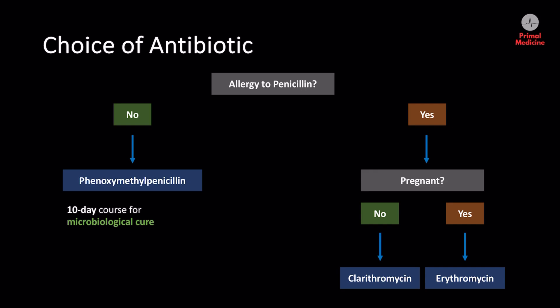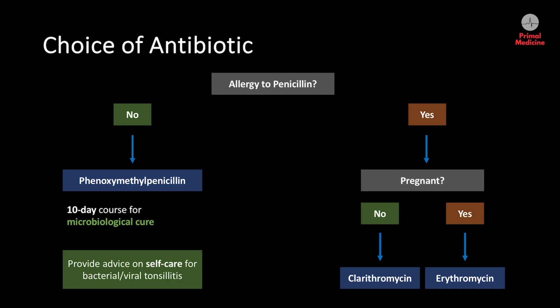If the patient has a penicillin allergy but is not pregnant, the first line is to use clarithromycin, which is a macrolide antibiotic. If the patient has a penicillin allergy and is pregnant at the time of presentation, the first line is to use a different macrolide such as erythromycin. Whether the tonsillitis is bacterial or viral, you should always give self-care advice — for example, recommending paracetamol for analgesia and ensuring the patient maintains adequate hydration by drinking as much fluid as possible during their illness.